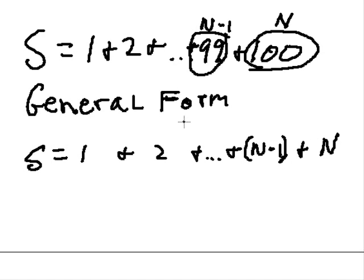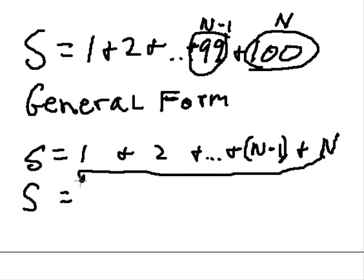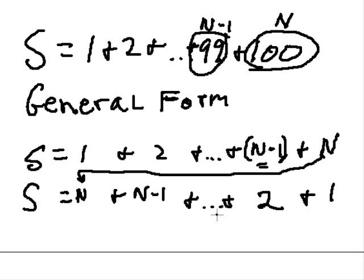This time I'm going to say S is equal to 1 plus 2 plus dot dot dot plus n minus 1 plus n. Now, I then said in the previous video, you reverse it. Now I say S is equal to n plus n minus 1 plus dot dot dot plus 2 plus 1, in reverse order.